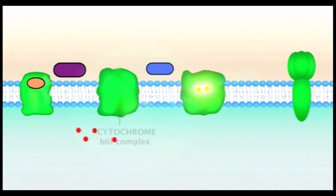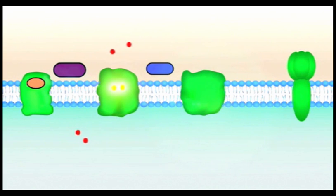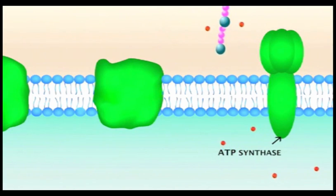Another important feature of the cytochrome complex is that it uses the energy of the electrons passing through it to pump hydrogen ions, that is, protons, from the stroma of the chloroplast across the thylakoid membrane into the lumen. The proton gradient that this creates produces an electrochemical force that will later be used by the ATP synthase complex to make ATP.